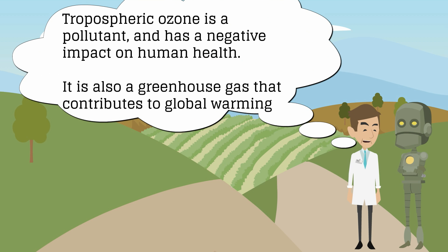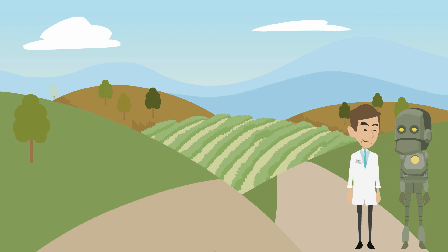Well, because the tropospheric ozone is made from pollutants, it is a pollutant itself, which makes it harmful to humans. It is also a greenhouse gas that contributes to global warming. This is much information to compute. Let me check if I am understanding. Go ahead.